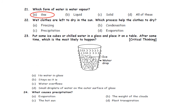Question 22: Wet cloths are left to dry in the sun. Which process helps the cloths to dry? A. Freezing. B. Condensation. C. Precipitation. D. Evaporation. Wet cloths left to dry in the sun — this process is termed as evaporation. The liquid present in the wet cloths changes into gaseous phase, that is vapour state. So the answer is option D.